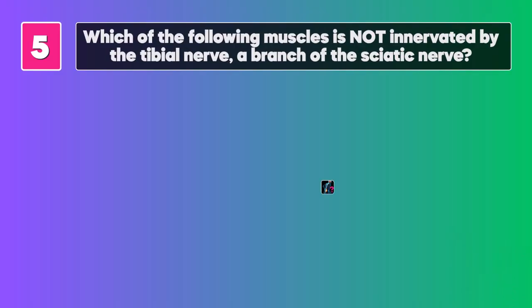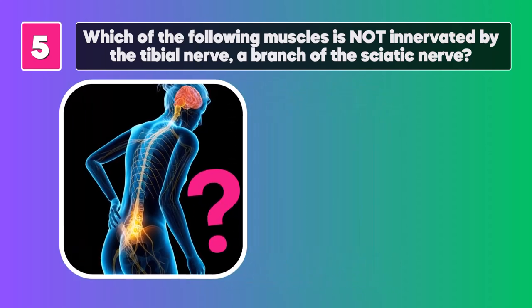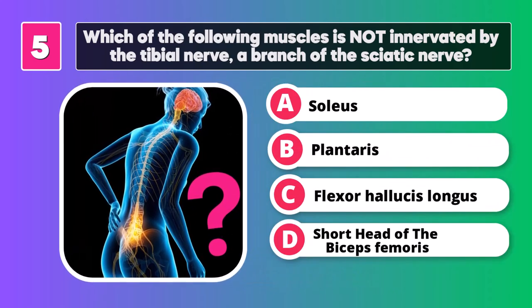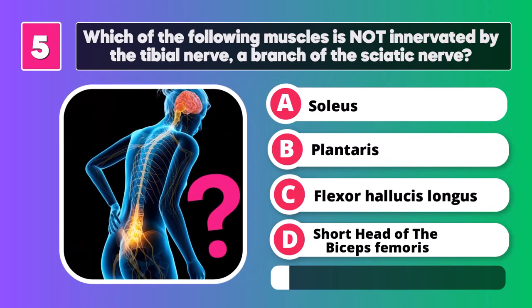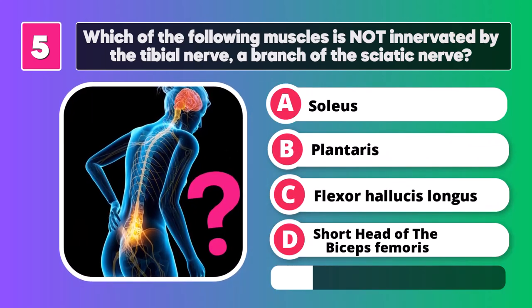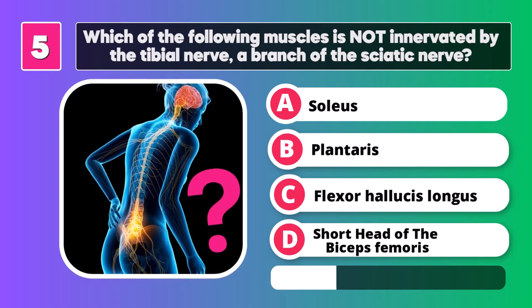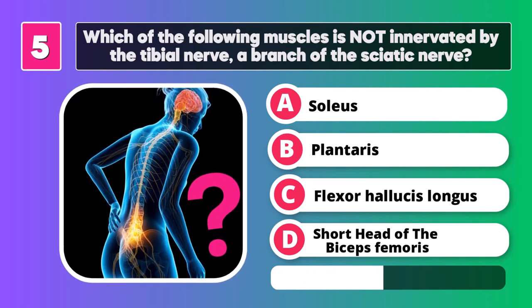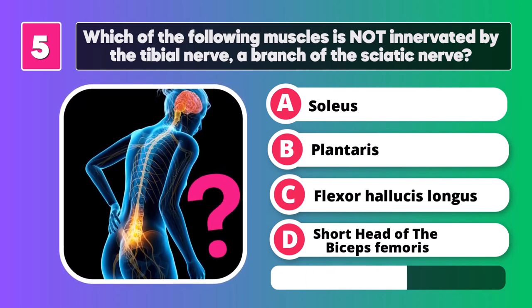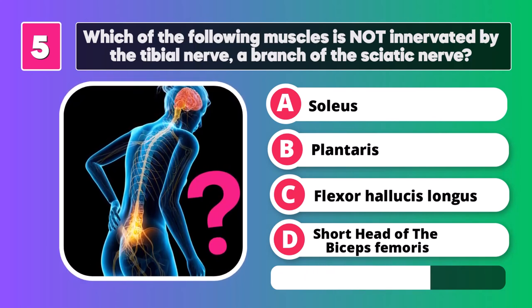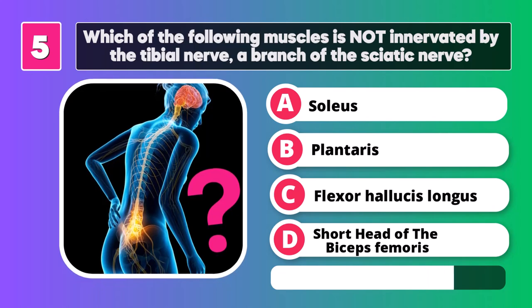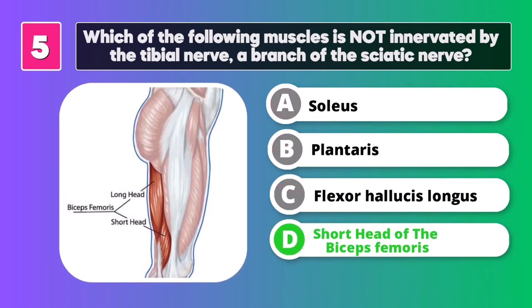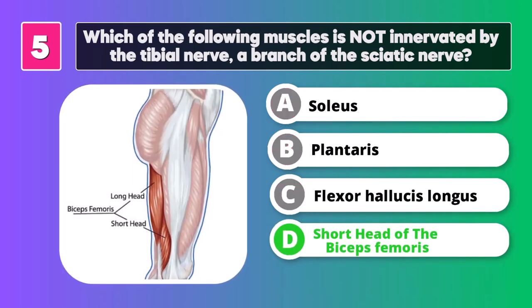Which of the following muscles is not innervated by the tibial nerve, a branch of the sciatic nerve? Short head of the biceps.